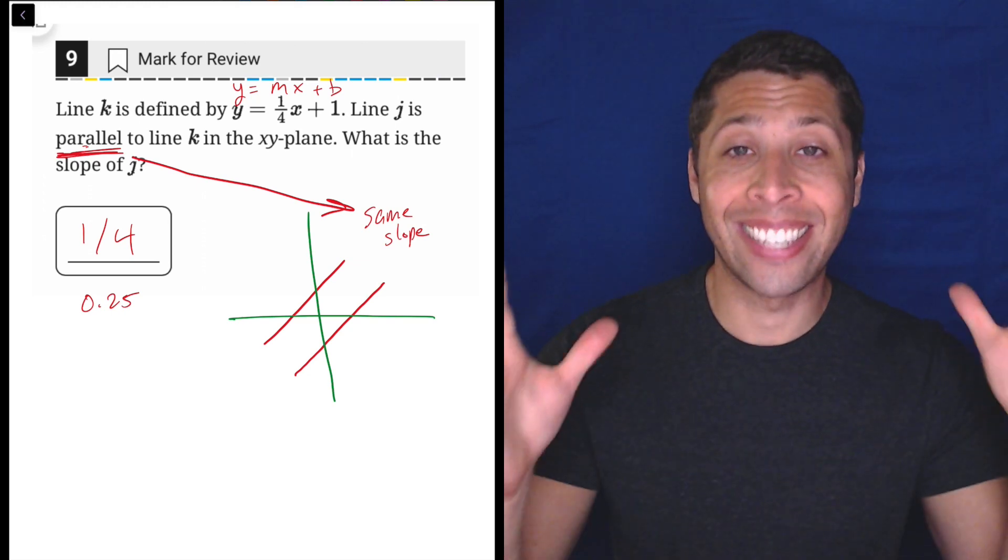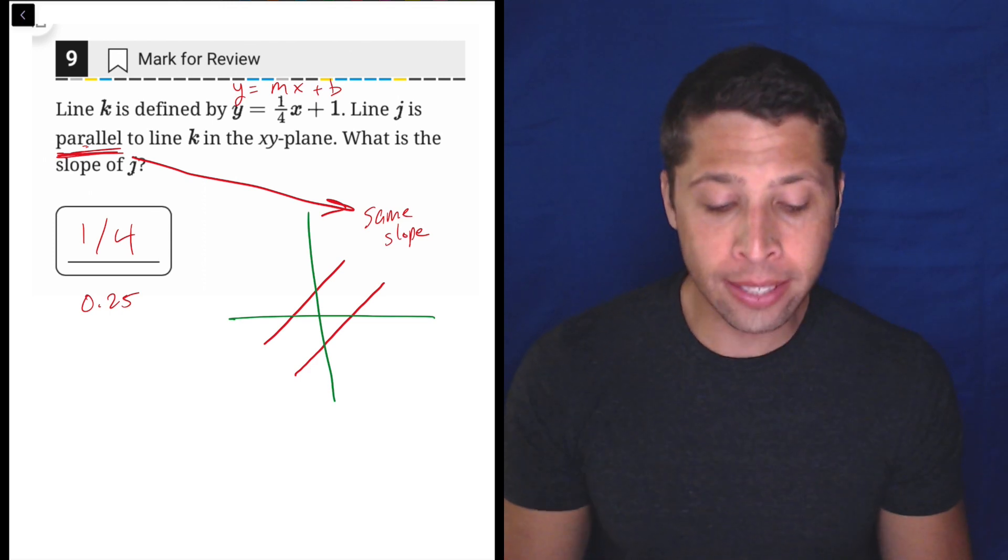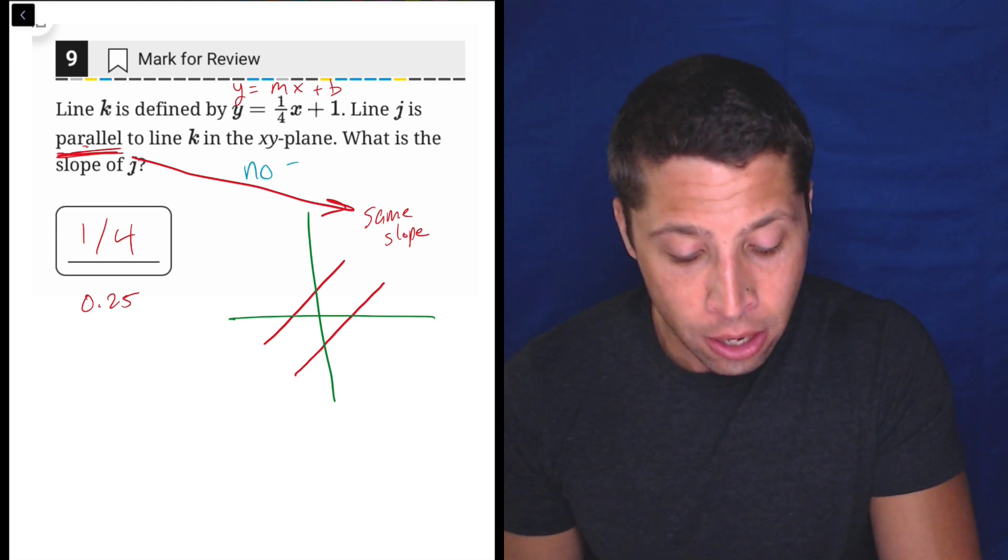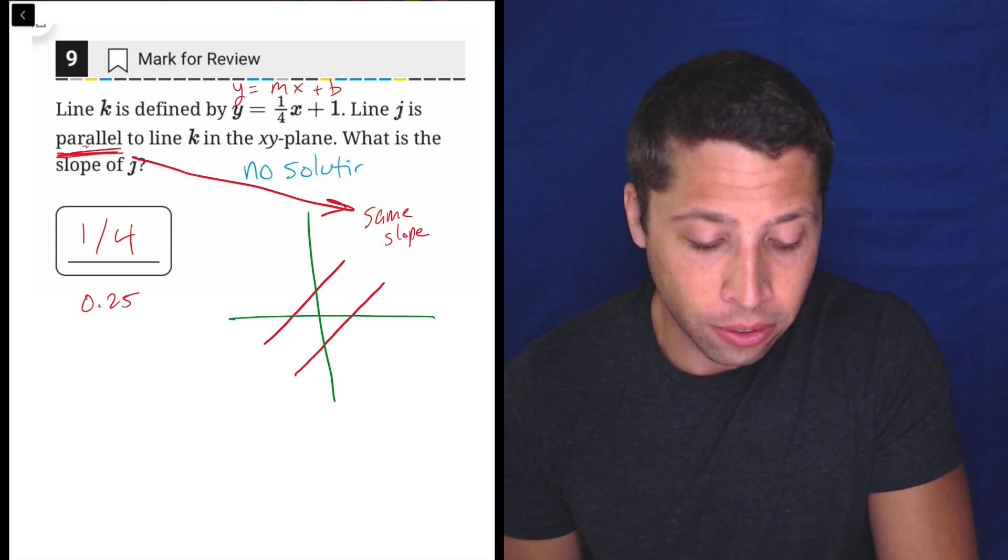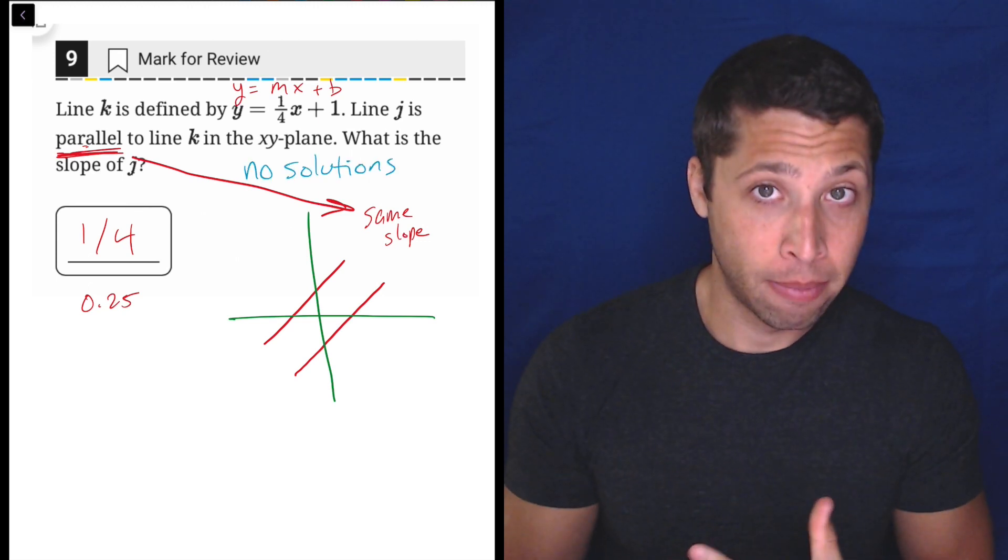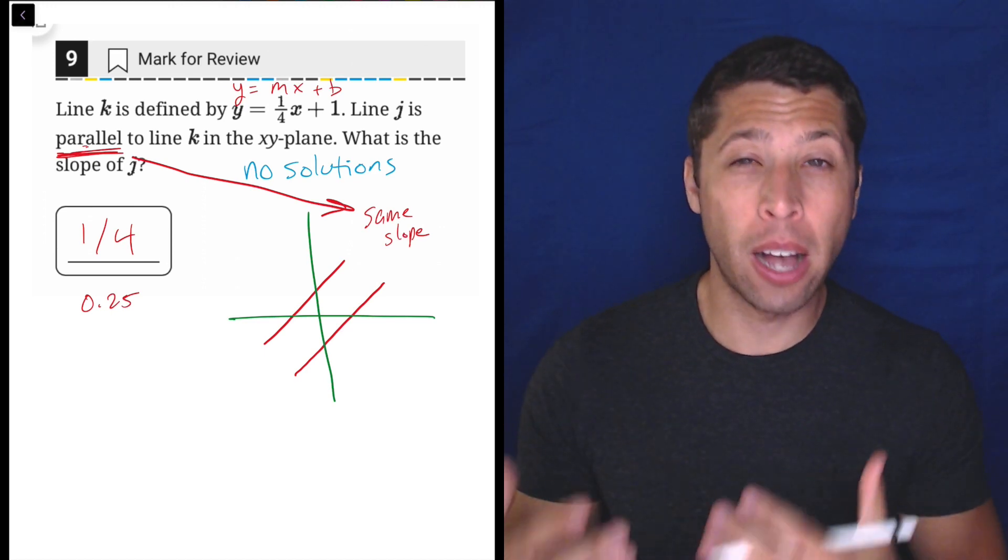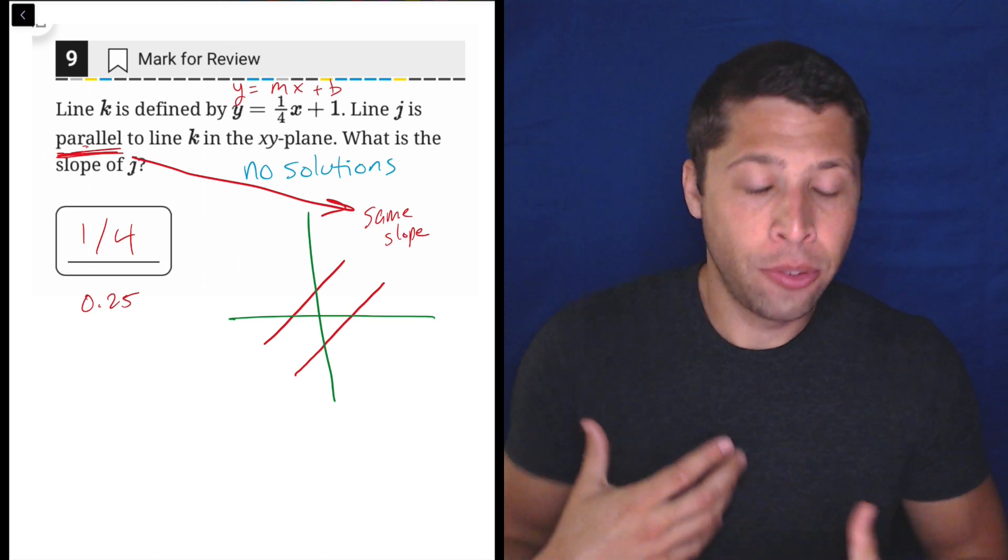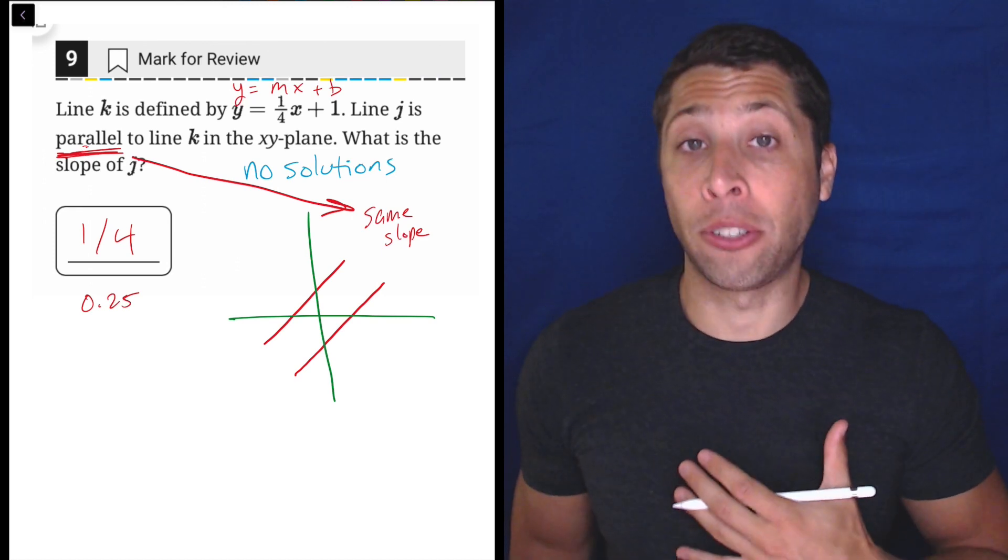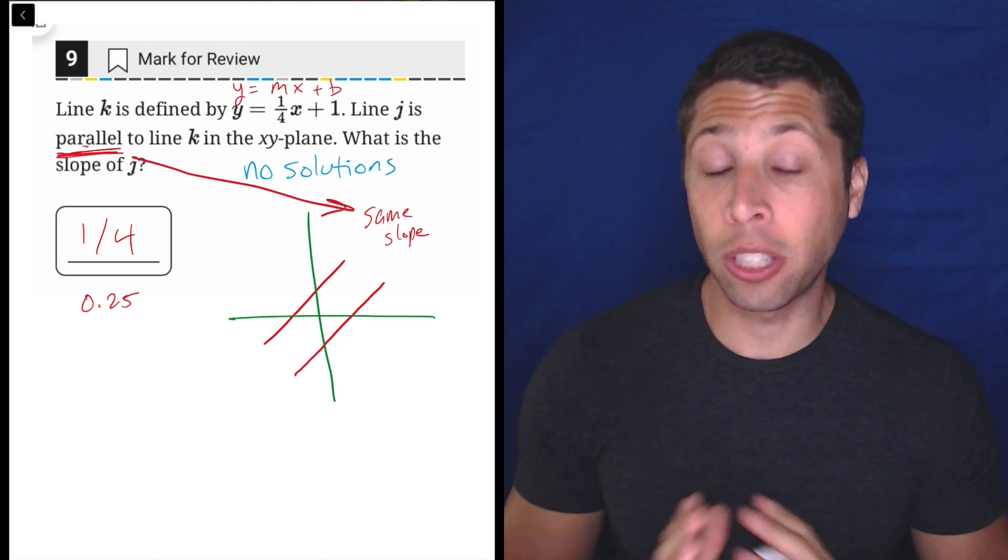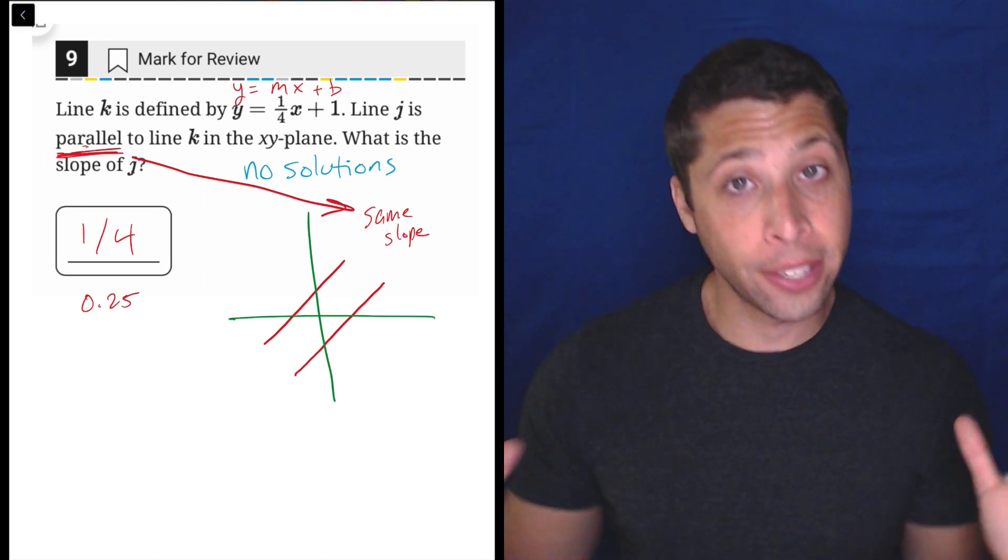Another way of talking about this exact same situation is to say that line J and line K have no solutions. The system of those two lines has no solutions. Because when we talk about a graph, solution basically just means intersection. And if two lines are parallel, they're going in the same direction forever, they never cross, they don't bend or curve towards each other.